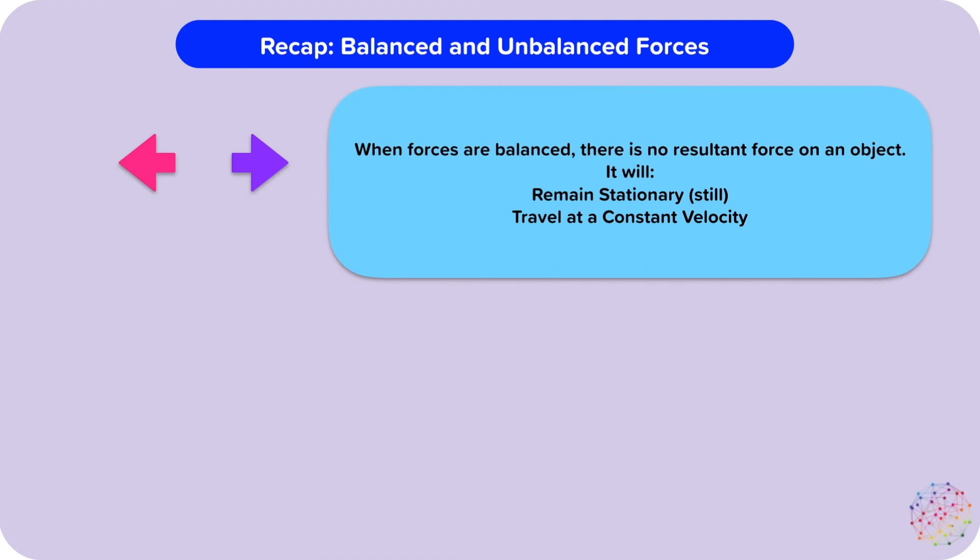Forces are balanced when there is no resultant force on an object. For example, these two forces are exactly the same size, but pulling in opposite directions — they cancel each other out. If the forces are balanced, an object will remain stationary, stay still or be stopped, or travel at a constant velocity, a constant speed.